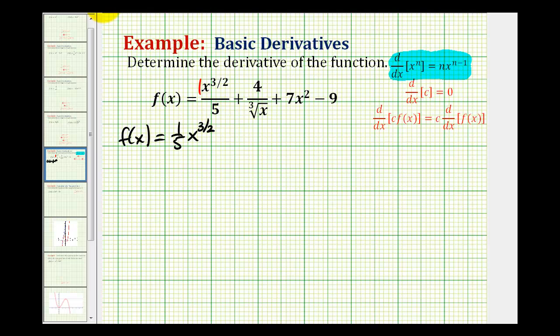And then for the second term, we need to rewrite the cube root of x in rational exponent form. Remember this x has an exponent of one, so this would be four all over x to the one-third power.